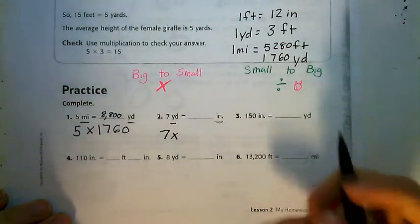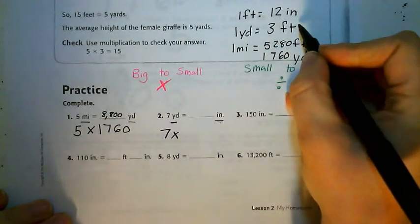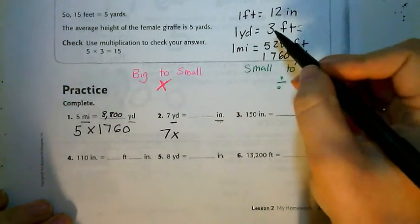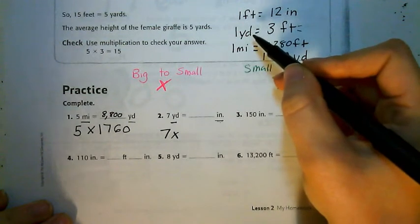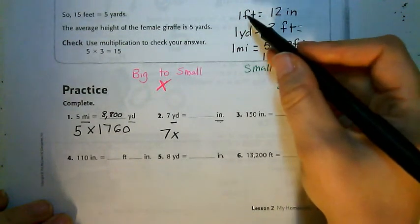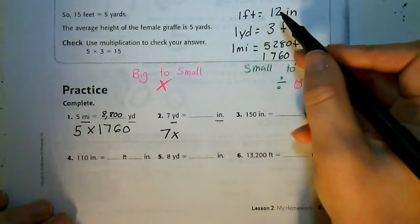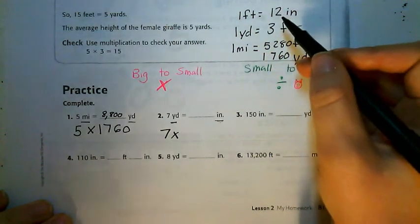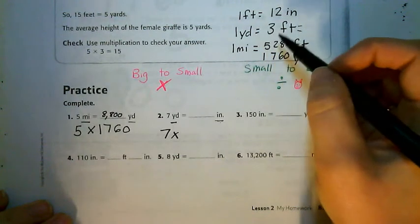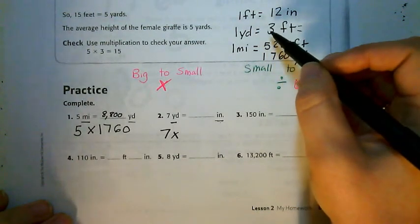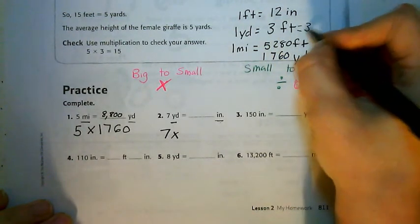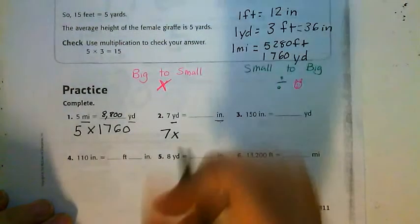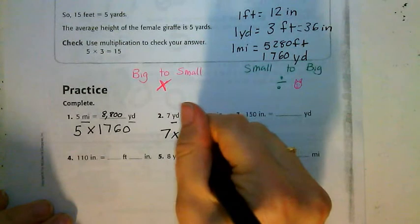So let's go up here to my conversion chart. 3 feet are in one yard. Well, I know that every foot has 12 inches in it. So if I have one foot, I have 12 inches. If I have two feet, I have 24 inches. If I have three feet, I have 36 inches. So I can also see that one yard equals 36 inches. So that's what I'm gonna have to multiply 7 by—multiply it by 36, because there are 36 inches in a yard.